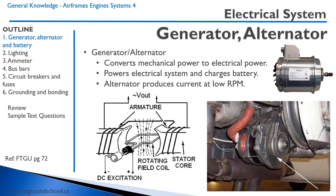Most modern aircraft have an electrical system. Back in the day, aircraft that were produced around the vintage Second World War era — Piper Cubs, Aeronca Champs — to save weight, they did not have an electrical system.